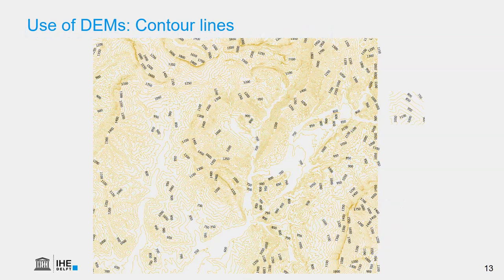Elevation data can also be visualized using contour lines, which can be derived from DEM rasters. Contour lines are formed by connecting locations with the same elevation, drawn with a certain equidistance — the elevation difference between two lines. In this case, an equidistance of 50 meters is used. When lines are close together the area is very steep; when they are further apart it is less steep. We can therefore interpret the shapes of the landscape from a contour line map.